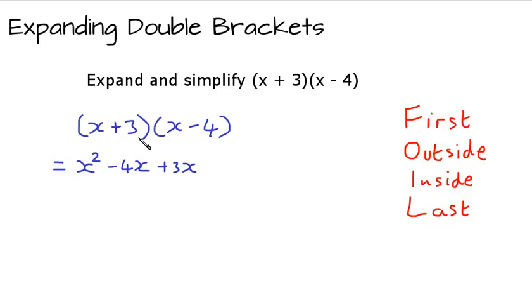And finally, we've got the last terms. So that's positive 3 times negative 4. Now, a positive times a negative gives us a negative answer, and 3 times 4 is 12, so that's negative 12.